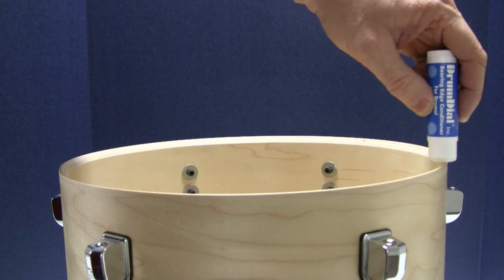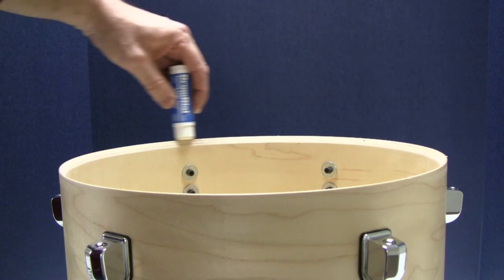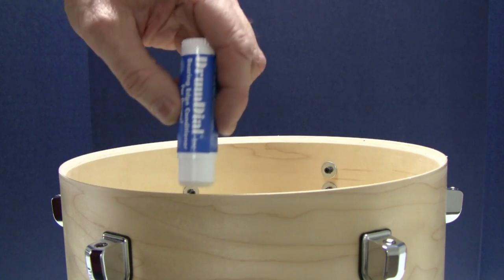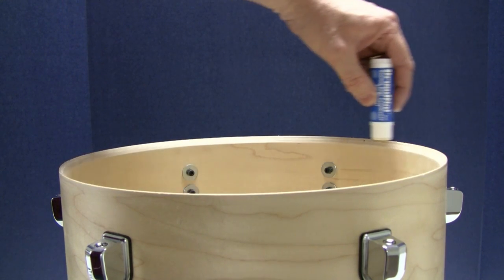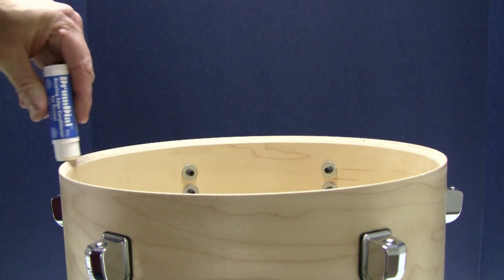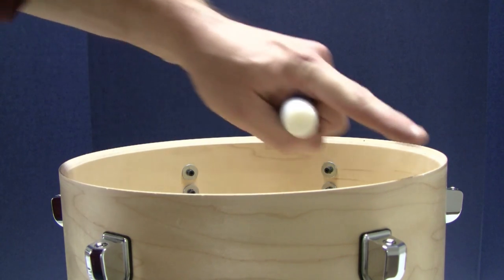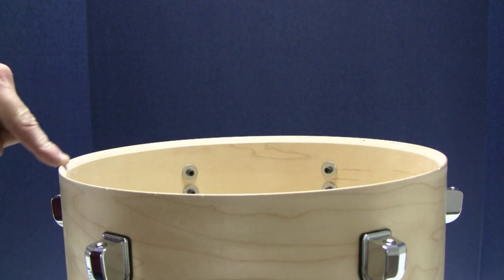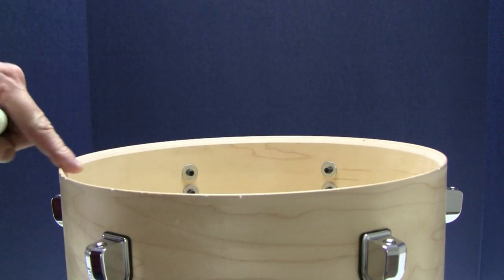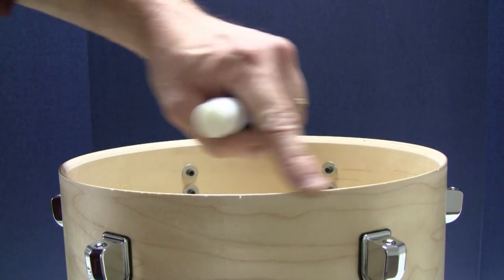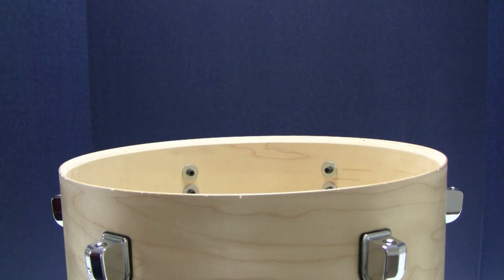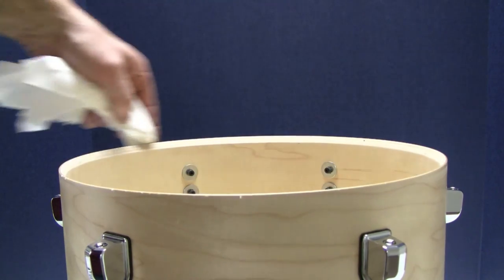Wipe down and clean the bearing edge to remove any buildup of lint, dirt, or dust. Apply the bearing edge conditioner in a smooth, non-stop application to the entire top bearing edge. Then rub it in with your fingertip or soft cloth. There's no need to force down on the conditioner stick. A light touch is all that is needed. Remove any excess with a paper towel or soft cloth.